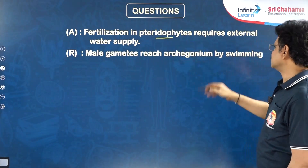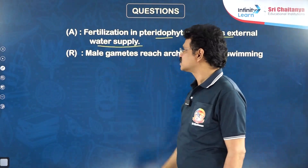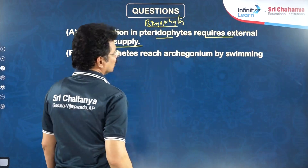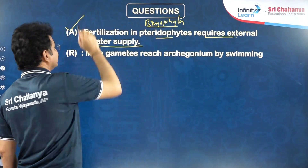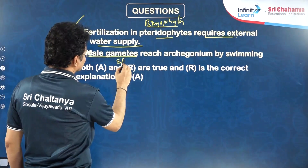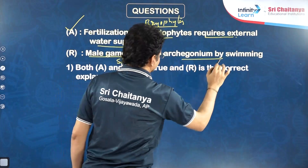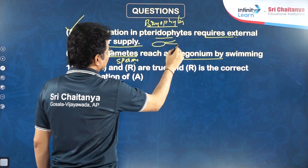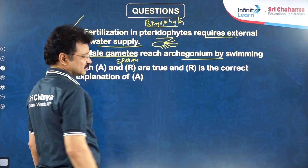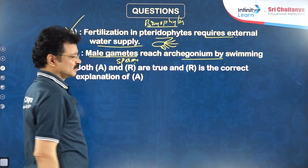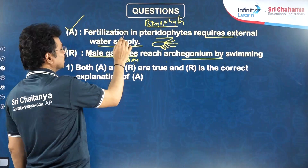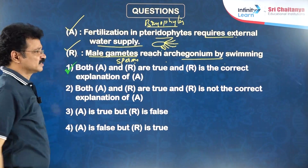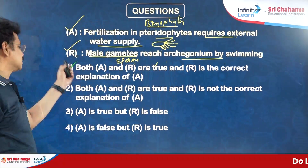Next question: Fertilization in pteridophytes requires external water supply. Statement is true — not only pteridophytes, even bryophytes require water for fertilization. Reason: Male gametes (sperms) are motile, with flagella or cilia, and need to swim through water to reach the archegonium. That is why water is essential for fertilization. Both assertion and reason are true, and reason is the correct explanation — first option. The same applies if bryophytes are mentioned instead.